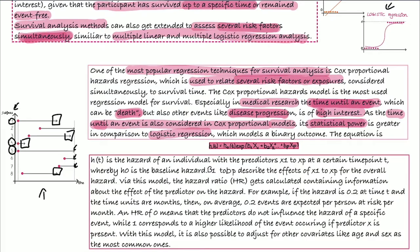So this is the equation, and this might look rather complicated but actually it's not. HT is the hazard of an individual which has the predictors x1 to xp at a certain time point t, and h0 is the baseline hazard.